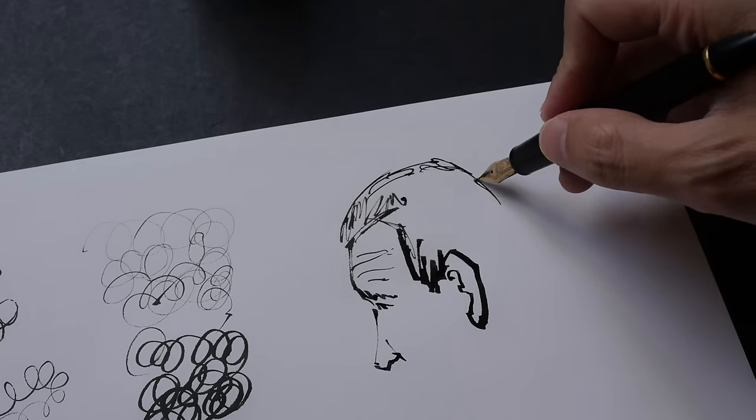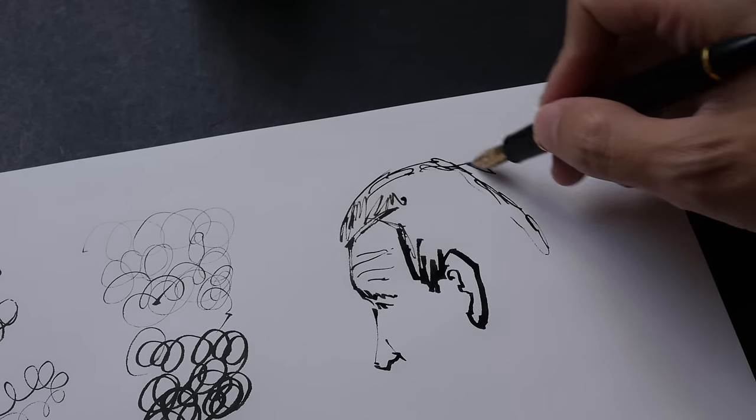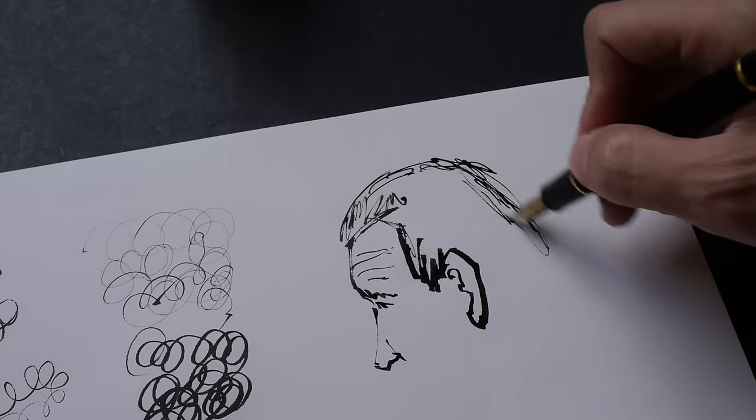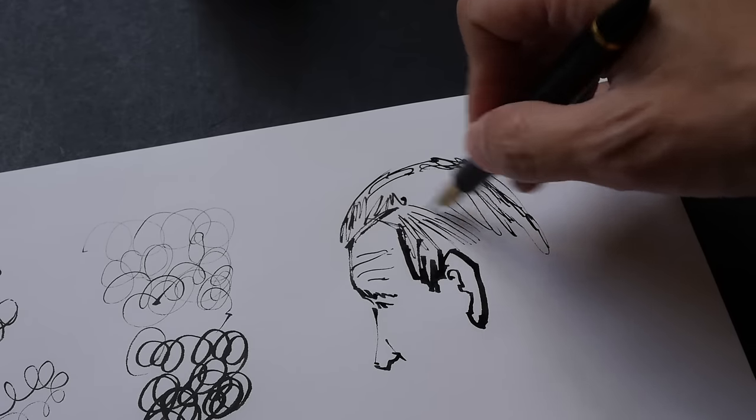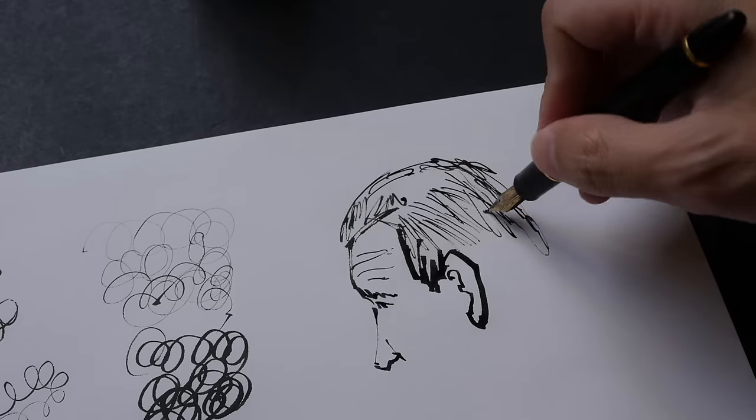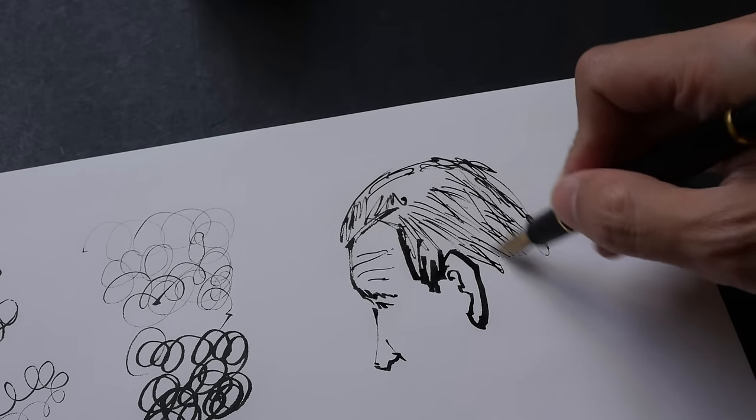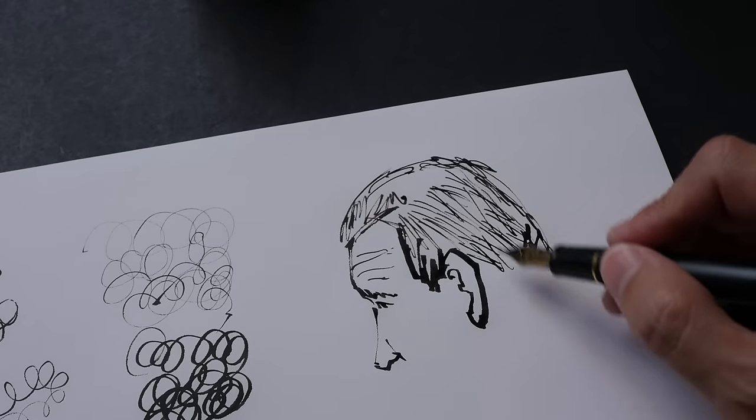So for the hair for example I'm going to use very thin lines and I'm going to cross hatch the hair, so you can do that with this particular pen as well. And it writes very smoothly on the paper.